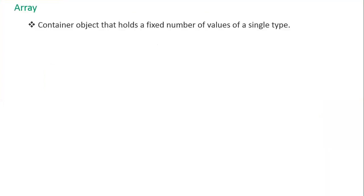As you already know, an array is a container object that holds a fixed number of values of a single type. The length of the array is established when the array is created, and the length is fixed after creation.